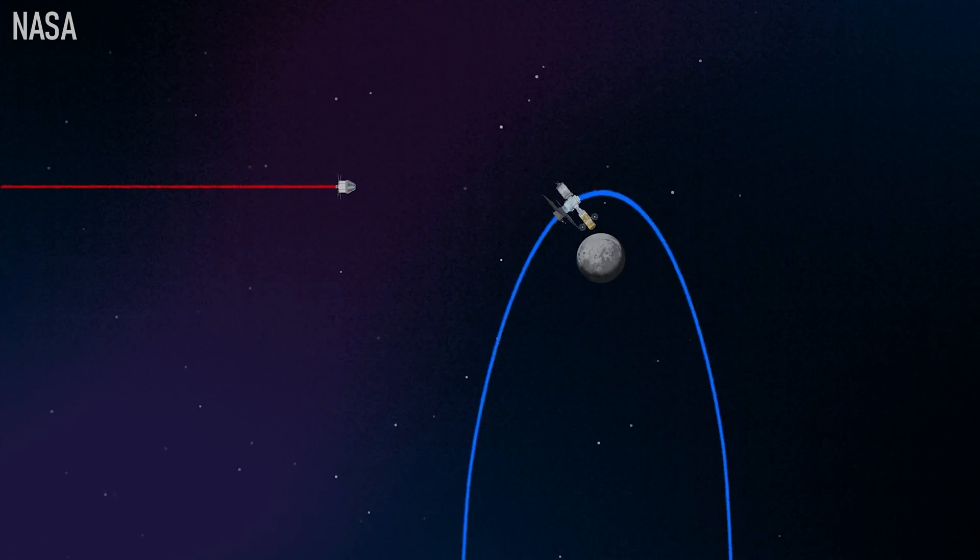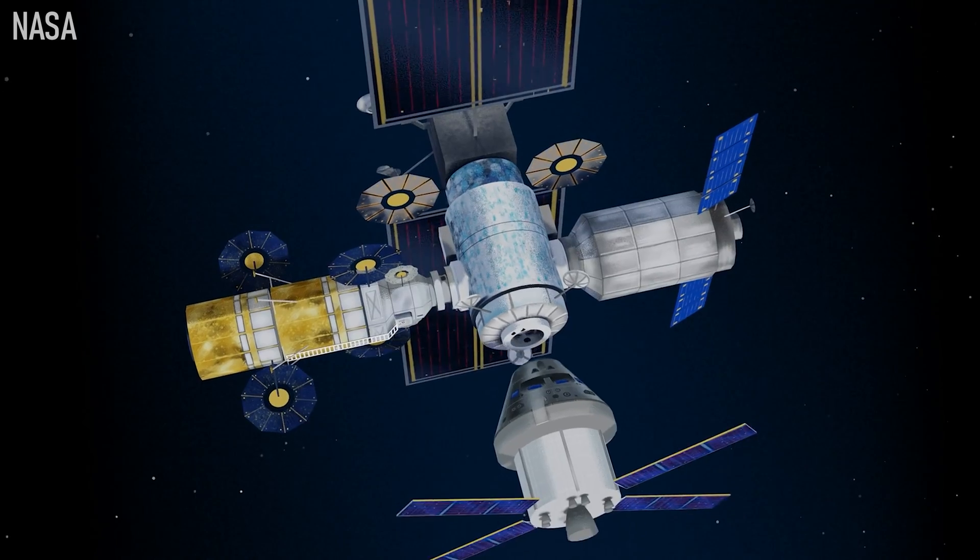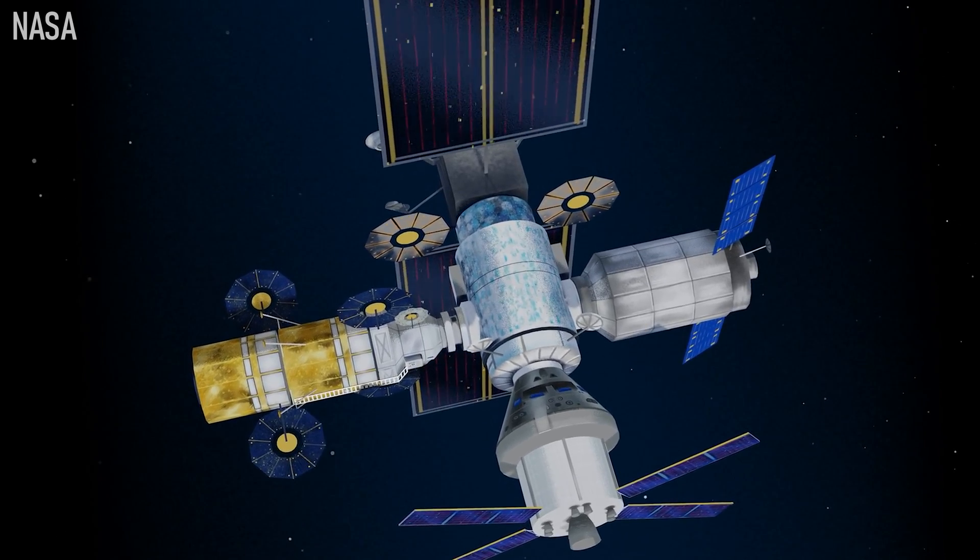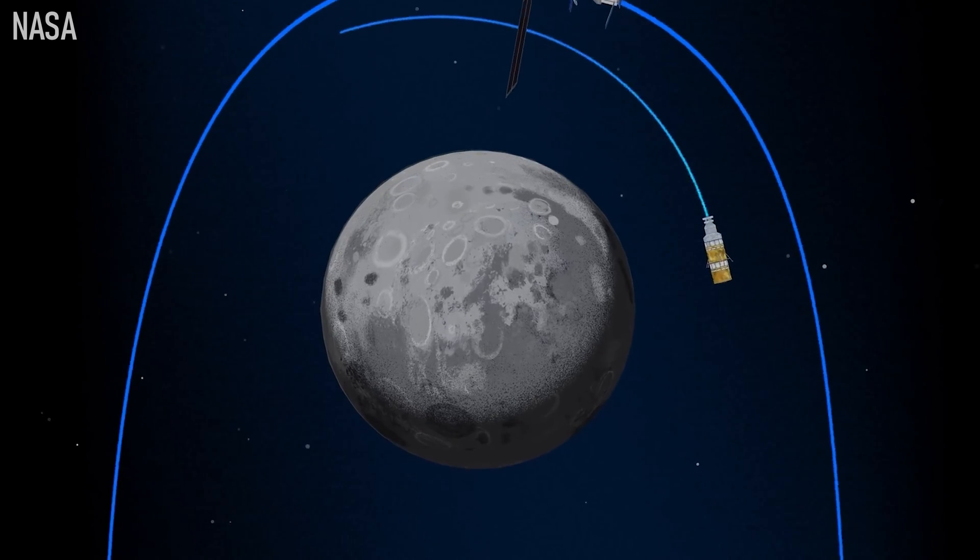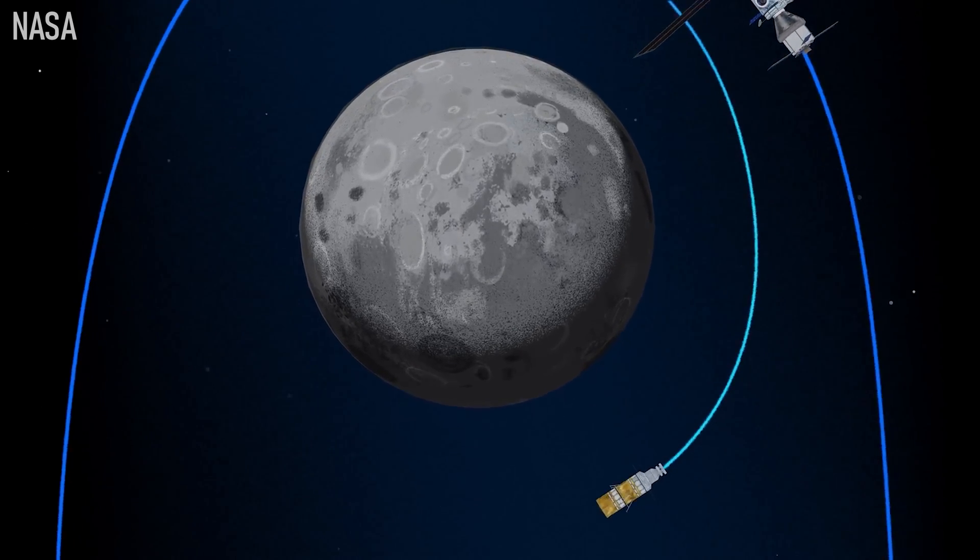And during Artemis 3, the astronauts will use the Orion spacecraft to dock with the newly built Lunar Gateway, then take Starship down to the moon to start humanity's permanent stay on the lunar surface.